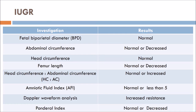Summarizing all investigations and results in IUGR: fetal biparietal diameter may be normal; abdominal circumference may be normal or decreased; head circumference is typically normal; femur length may be normal or decreased; head circumference to abdominal circumference ratio is normal or increased; amniotic fluid index is normal or less than 5; Doppler waveform analysis shows increased resistance; and the ponderal index is normal or decreased.